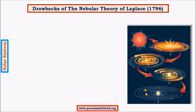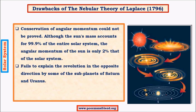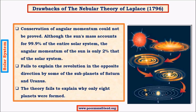What are the drawbacks of the nebula theory of Laplace? This theory is only a theoretical model and is still not exactly proved. The first drawback is angular momentum. There is a concept called conservation of angular momentum — if a body is rotating anti-clockwise, anything that comes out of it would also rotate anti-clockwise.